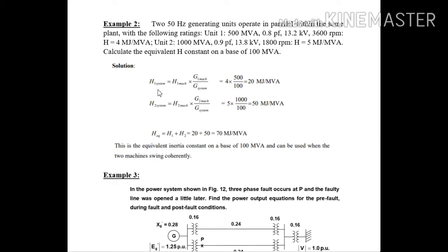The formula we are knowing to calculate the individual inertia constant for the machines as shown here. H1 system equals H1 machine into G1 machine by G system. All the values are given in the problem itself. Substitute those values and you will get H1 value as 20 mega joules per MVA.